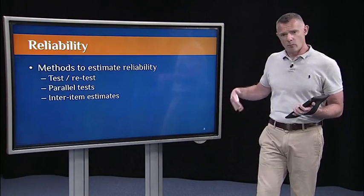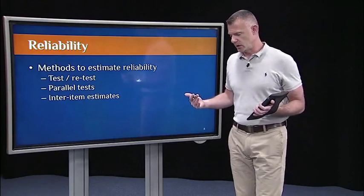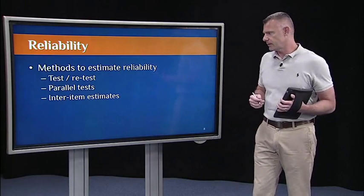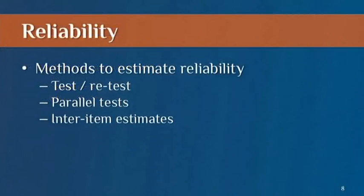The three that we'll talk about, and there are more ways to do this, but I'm just going to emphasize three: one is test-retest. Another is known as parallel tests, and the third is known as inter-item estimates. I'll walk through each of these.